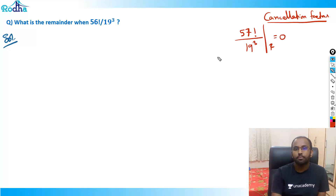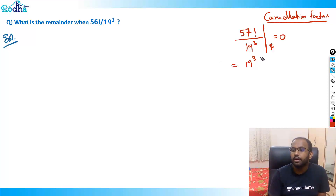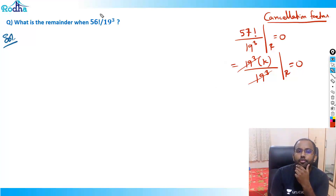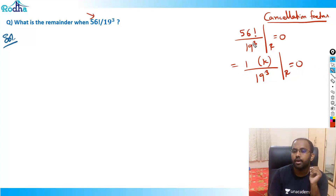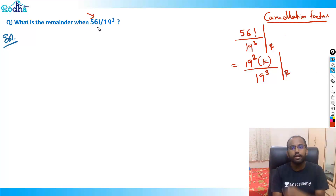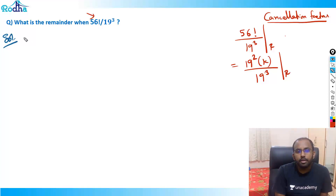Had it been 57 factorial divided by 19 cubed, the remainder would be zero, because 57 factorial includes three 19s: it would be 19 cubed times some k, divided by 19 cubed, giving remainder zero. But it is 56 factorial, which means only two 19s are present — it won't completely cancel. So 19 squared is the common cancellation factor I'll remove from numerator and denominator.